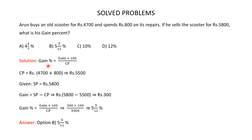You are asked to find Arun's gain percent. Gain percent is equal to gain multiplied by 100 divided by cost price. Since we do not know the gain, let's first find it. Arun buys the scooter for Rs 4700 and spends Rs 800 on its repair, so the cost price is Rs 4700 plus 800, which is Rs 5500.